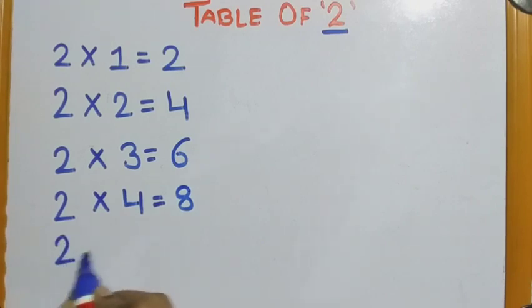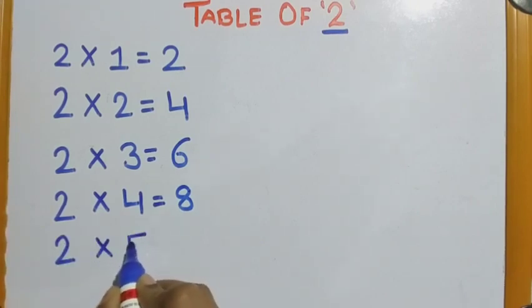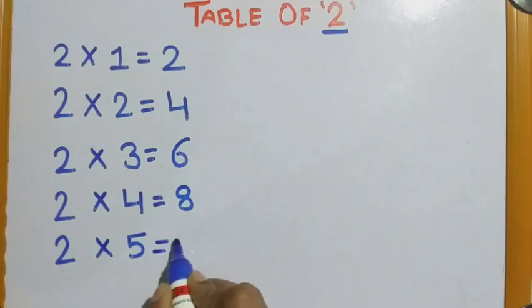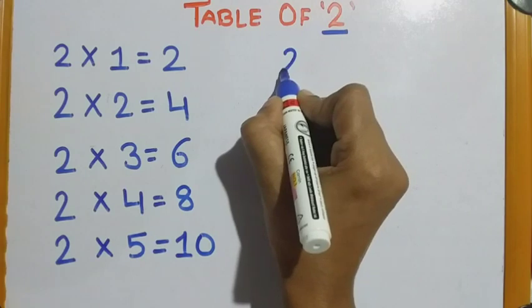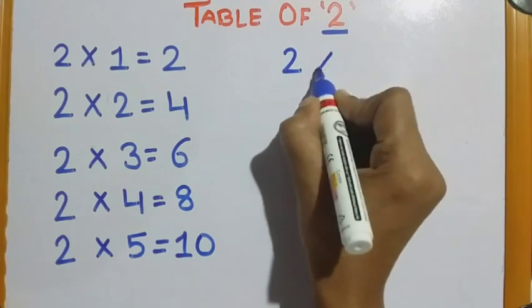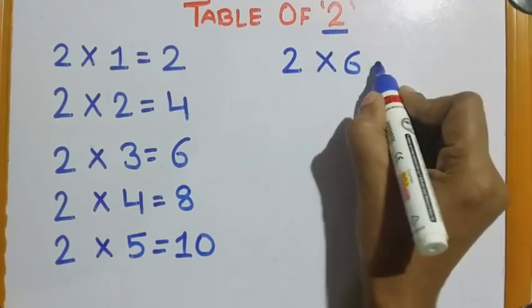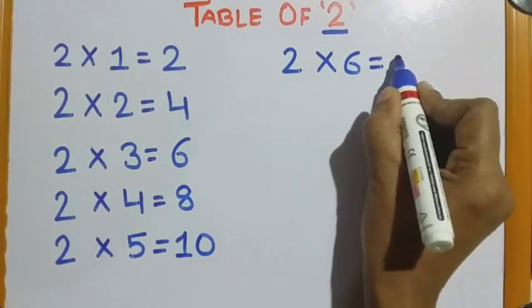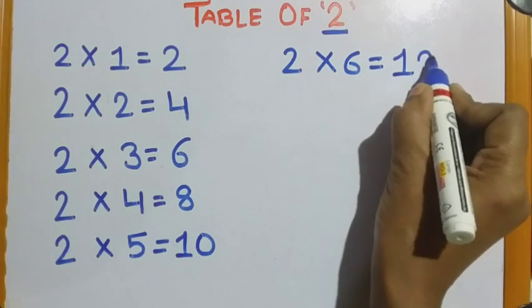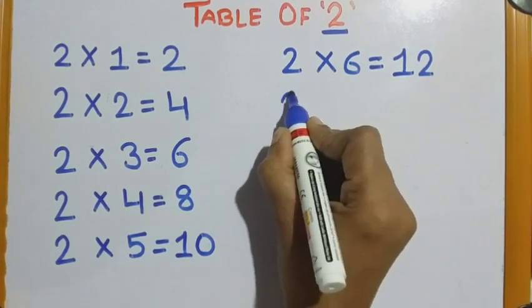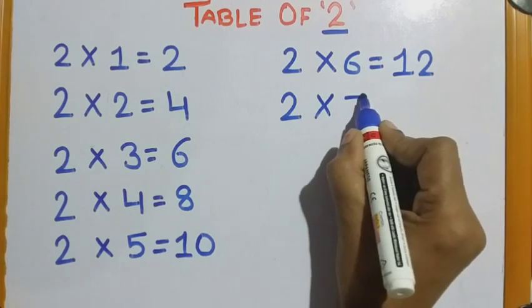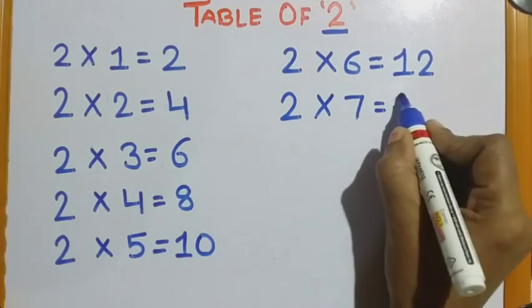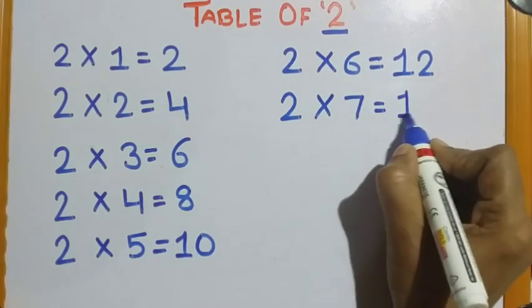Two fives are ten. Two sixes are twelve. Two sevens are fourteen.